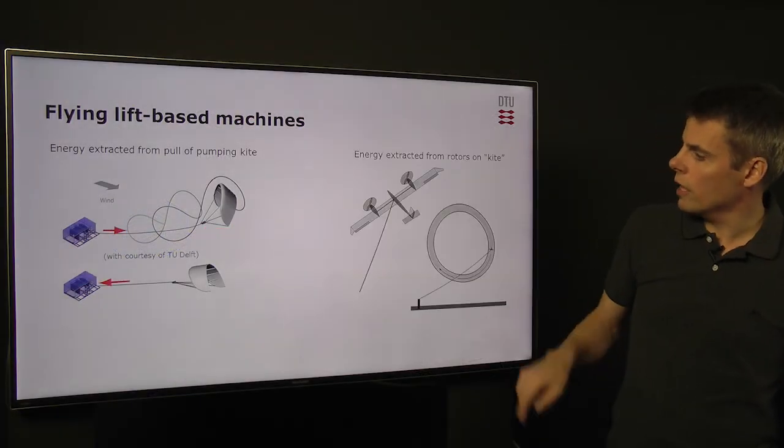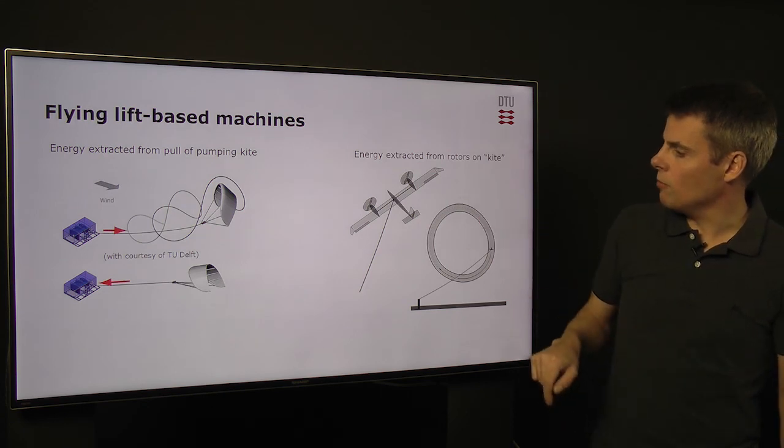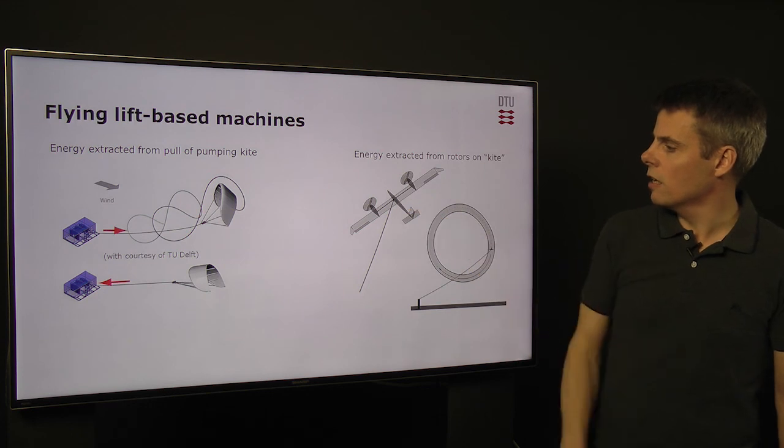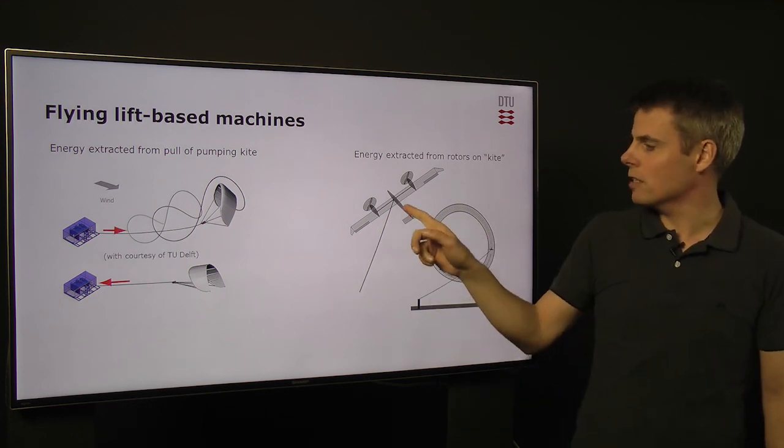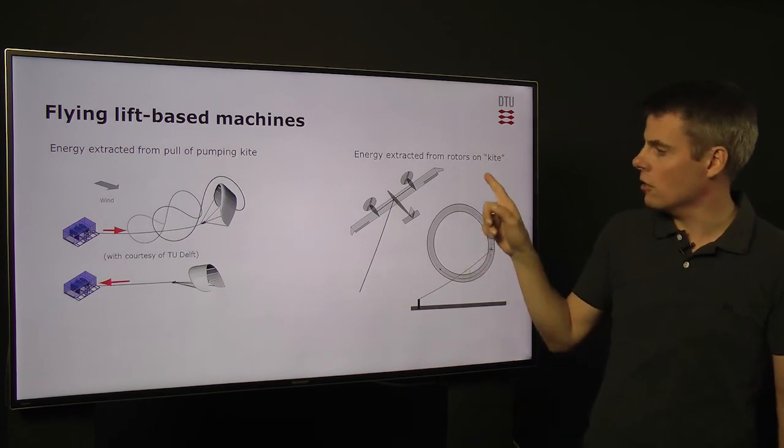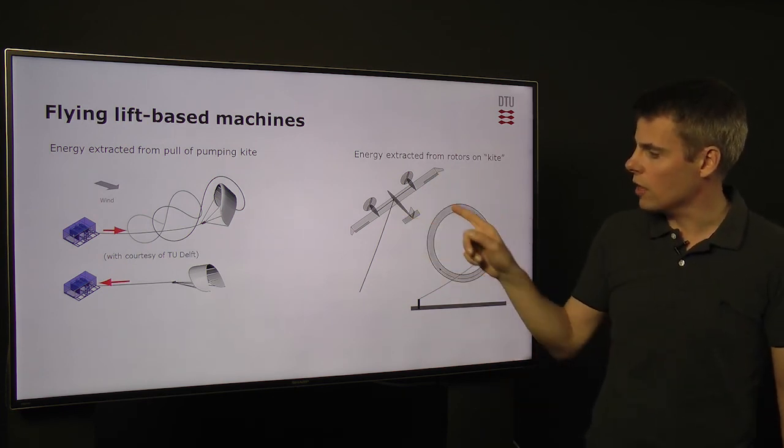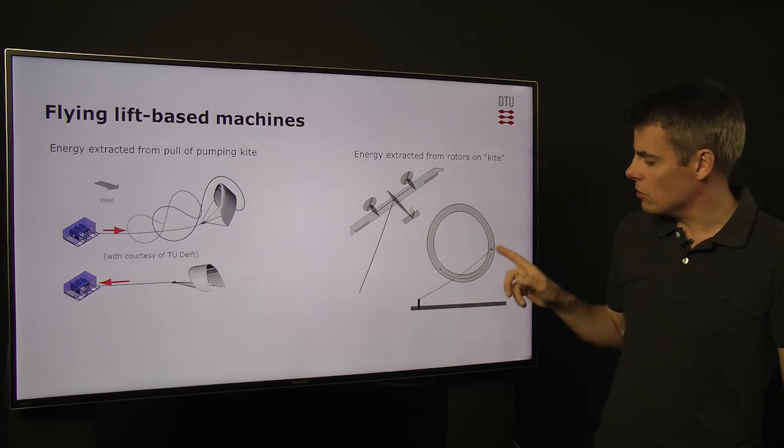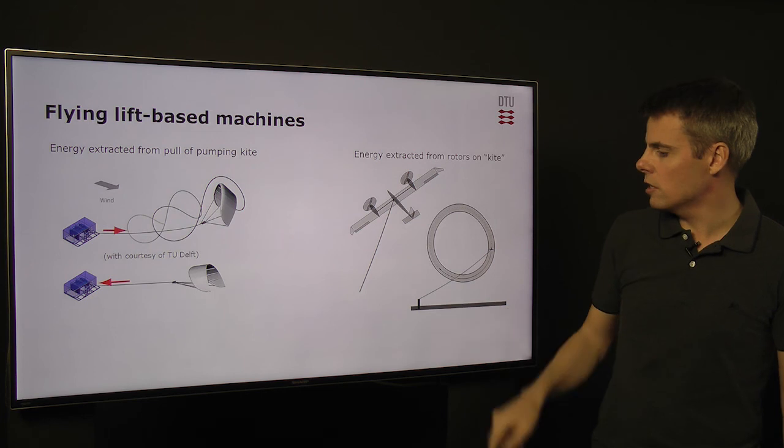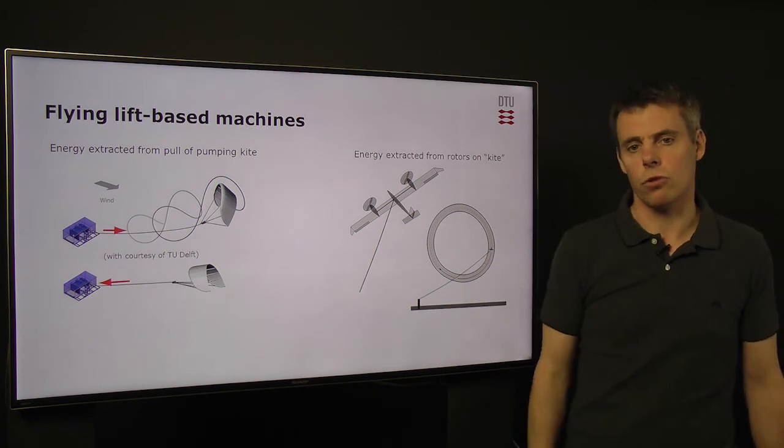This is the pumping kite with a cable pull. You can also extract the energy from the kite by mounting a propeller or you could say horizontal axis turbines on the kite itself and then fly it in circles and extract the energy from the generators on the kite and then you have to transmit the electricity generated through the cable to the ground.